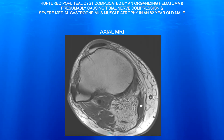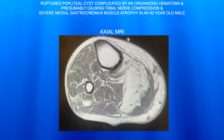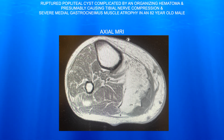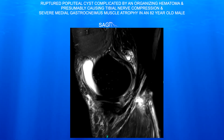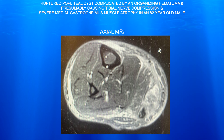This is a ruptured popliteal cyst in an 82-year-old male that caused significant atrophy of the medial gastrocnemius muscle, probably from tibial nerve compression. What's interesting about this cyst is it's probably a combination of serosanguinous fluid and organized hematoma, as this patient is on blood thinners.